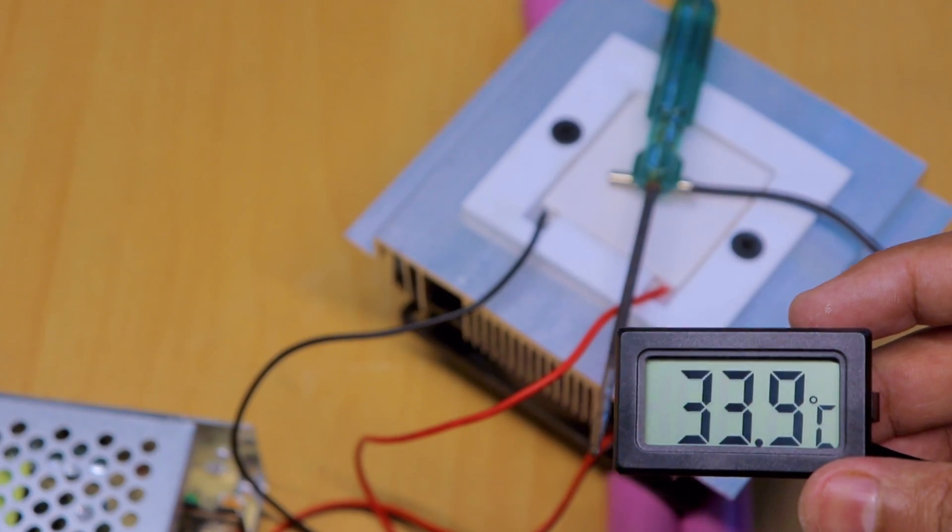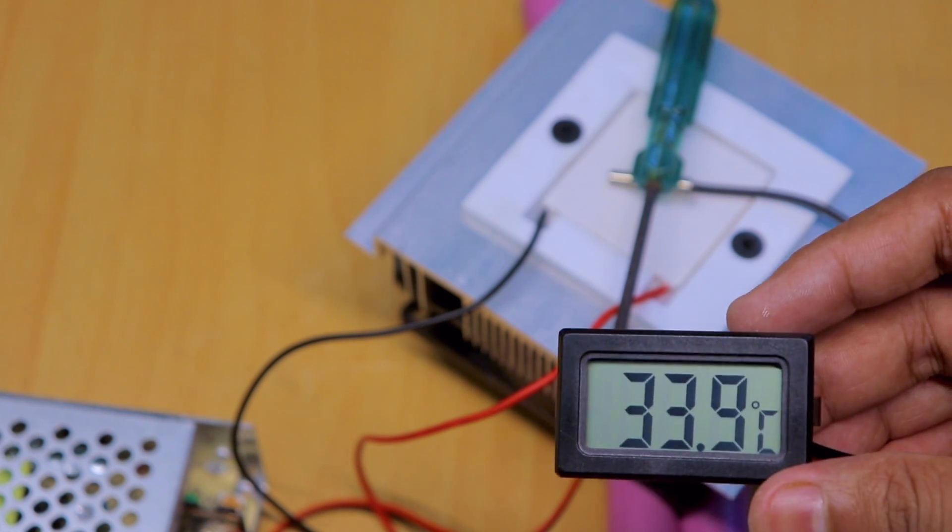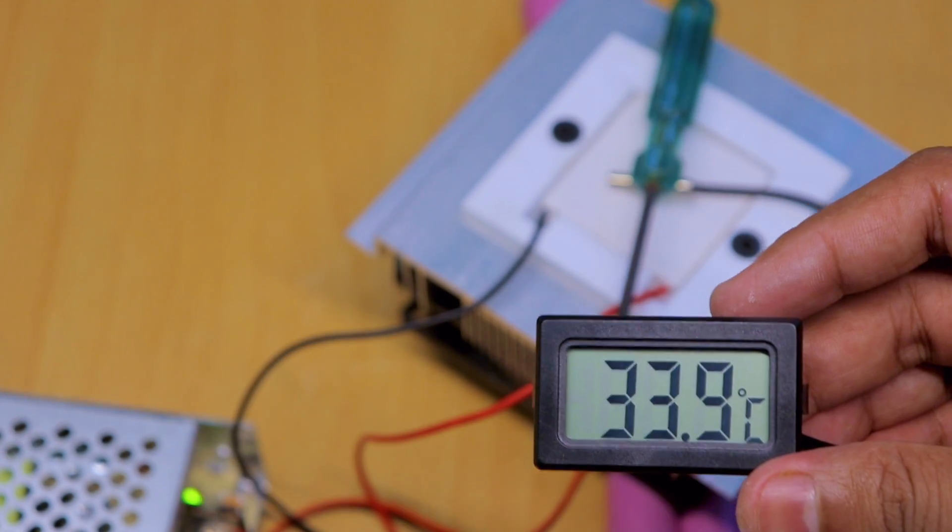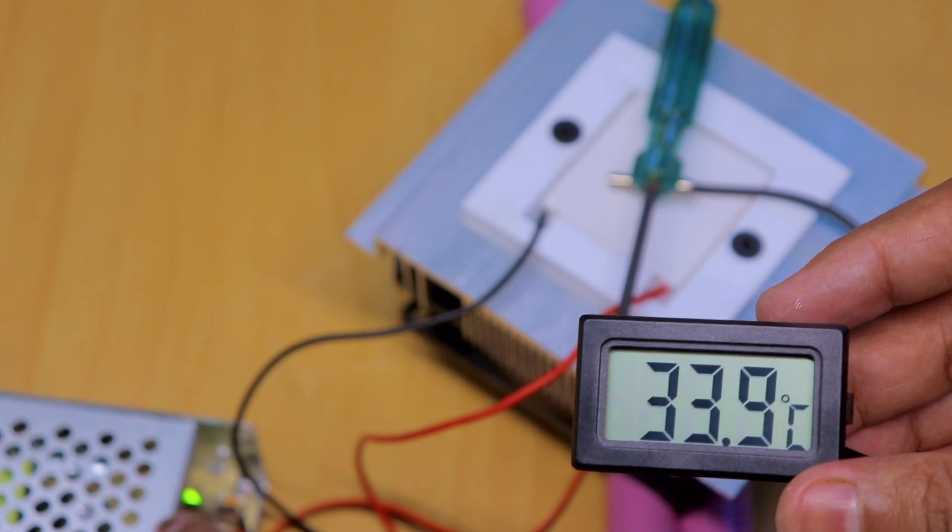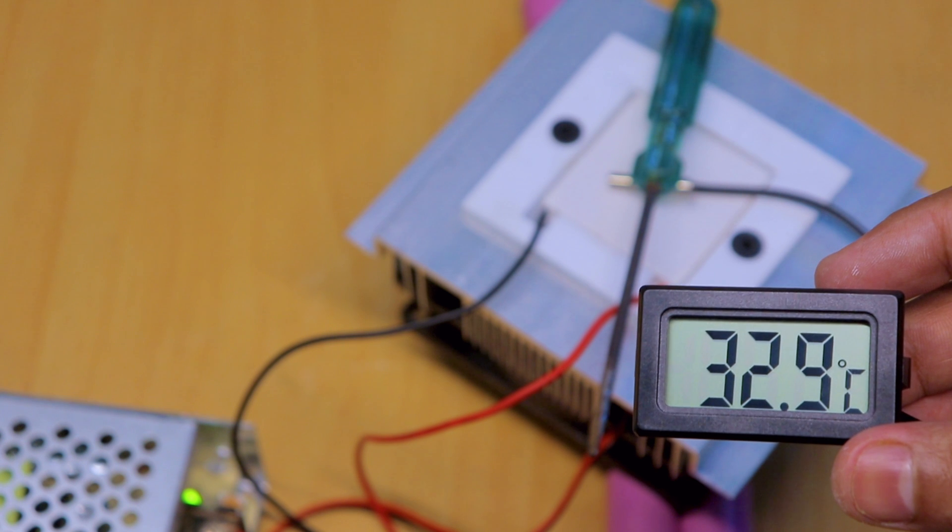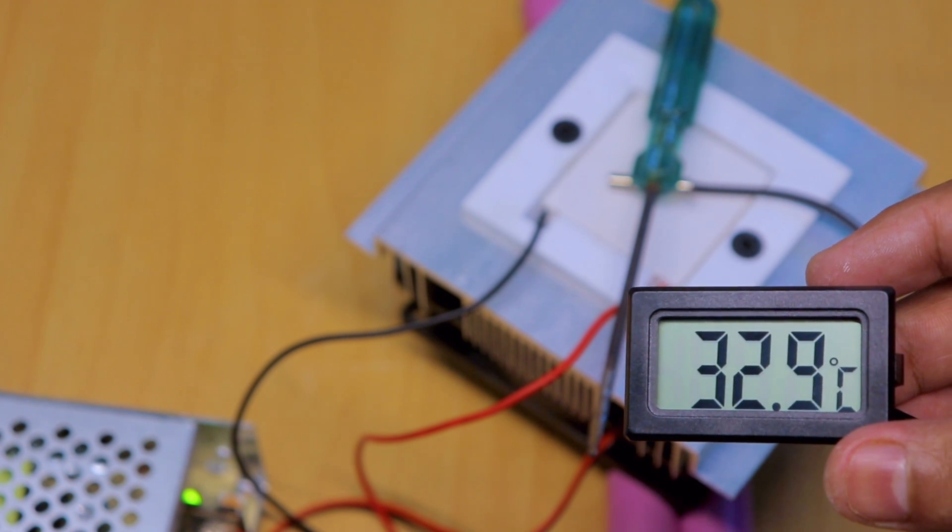Environmental temperature: 33.9 degrees Celsius. Let me turn on the system. Now the system is turned on. You can see that the light is glowing and the temperature starts dropping.